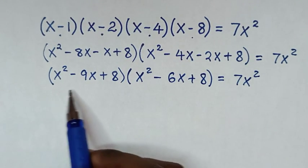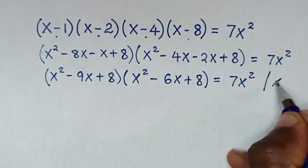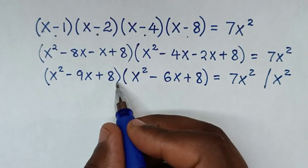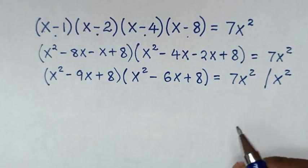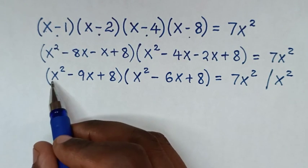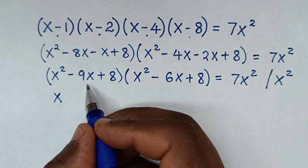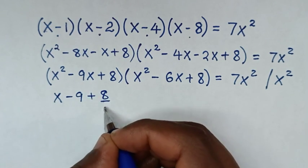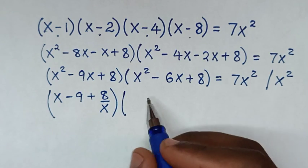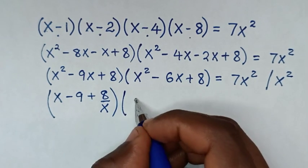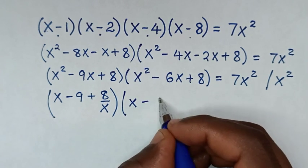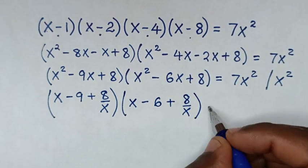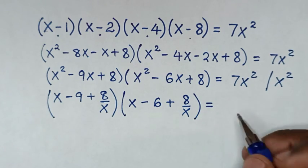Then in the next step, to simplify this equation, we'll divide the whole equation by x squared. Since x squared is x times x, we divide by x here and by x here on each bracket. So x squared divided by x is x, negative 9x divided by x is negative 9, and positive 8 divided by x is plus 8 over x. Similarly in the second bracket: x squared divided by x is x, negative 6x divided by x is negative 6, and positive 8 divided by x is plus 8 over x. The right side 7x squared divided by x squared equals 7.